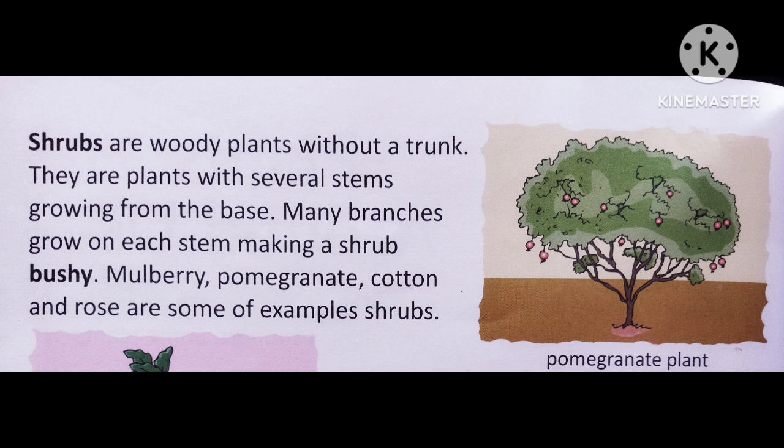A bushy stem means many branches coming out from a stem. Some examples of shrubs are the rose plant — most of you might have a rose plant at your home, have a look at it. You may also find a hibiscus plant at your home; that is also an example of a shrub.